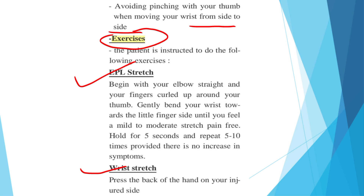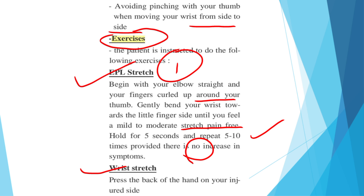For the extensor pollicis longus stretch: begin with your elbow straight and your fingers curled up around your thumb. Gently bend your wrist towards the little finger side until you feel a mild to moderate, pain-free stretch. Hold this position for 5 seconds and repeat 5 to 10 times. This is the stretch for the extensor pollicis longus.